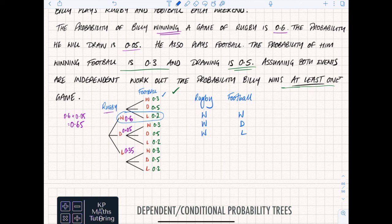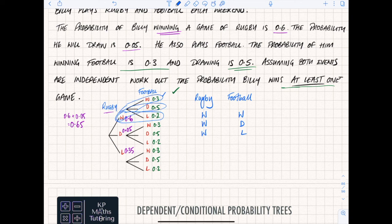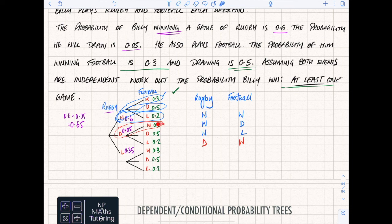So they are my three possible routes from the win branch. Now looking at the middle branch - if I draw rugby, I have to then win football, because draw-draw means I haven't won one game and draw-loss means I haven't won one game. So that route - draw rugby then win football - is the only route on that middle branch that counts.